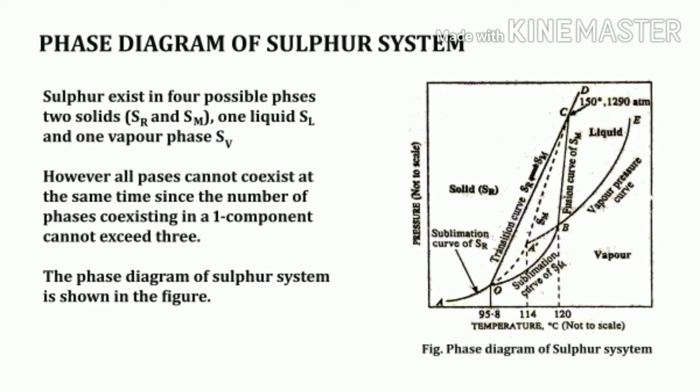The phase diagram of the sulfur system is shown in this figure. Look at the figure very carefully — we will discuss it in detail in the next slide.